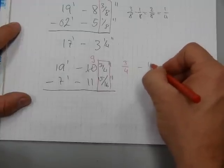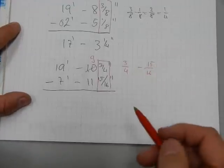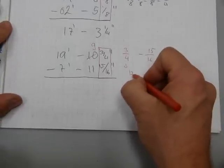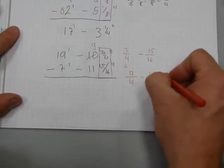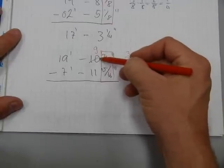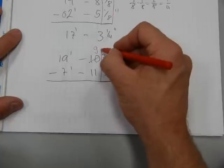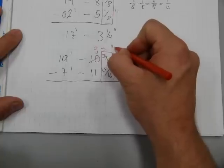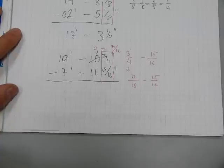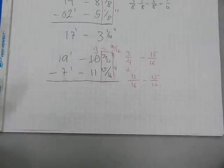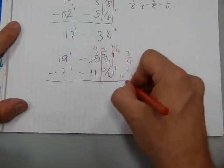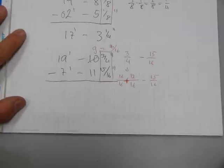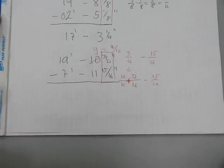And we have to take away 15 sixteenths from it. We can't. Because we have to increase the 3 quarters. That 3 quarters is otherwise 12 sixteenths. And there is the 15 sixteenths part. So when we take away 1 inch here, that 1 inch becomes 16 sixteenths. That must be added to the 3 quarter inches to increase it. So 16 sixteenths plus 12 sixteenths minus 15 sixteenths.